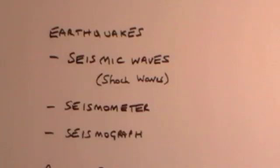When an earthquake occurs, it causes a shock wave. We call it a seismic wave. These are measured on a piece of equipment called a seismometer. And the graphical output, which shows the extent of the shock wave, is called a seismograph.